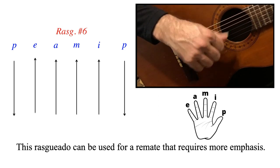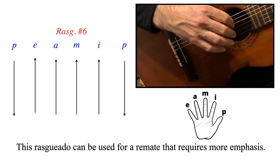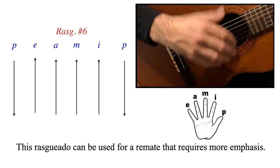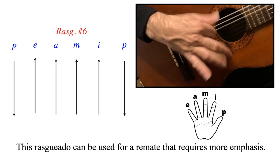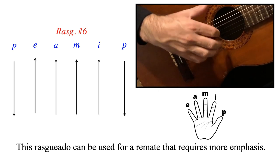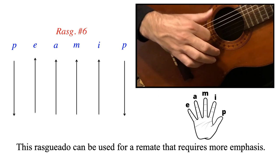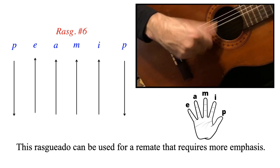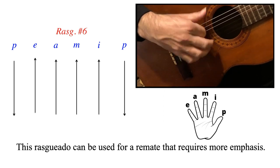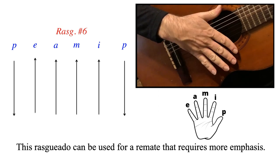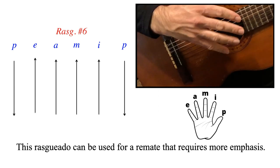So notice that movement of the wrist. The wrist is slightly rotating, and the thumb is going up and down. So this is my favorite, personally, rasqueado number 6. You could use this for everything. It's nice and full. It could be very explosive, it could actually be very full and slow, gradual. It's very versatile. I love this one, number 6.